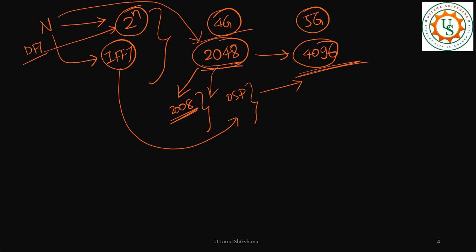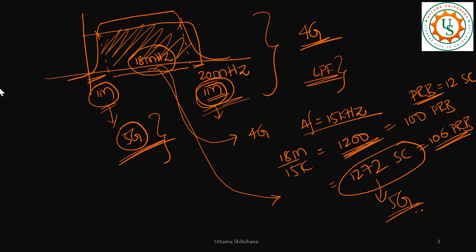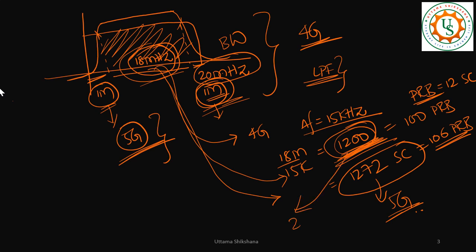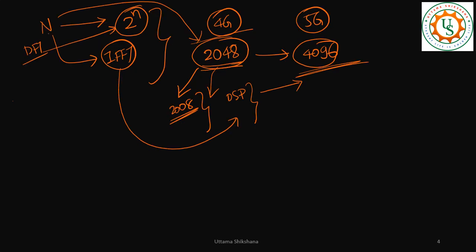Everything is interrelated: with 20 MHz bandwidth, 18 MHz effective, and 15 kHz sub-carrier spacing, we get 1200 sub-carriers. The next power of 2 above 1200 is 2048, so 1024 is not sufficient. This is one reason the IFFT size N is chosen to be 2048 in 4G.